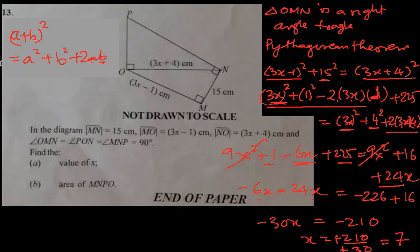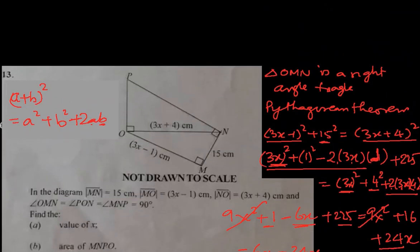So x is 7. That means, let's write the correct length now. This is 3 times 7, 21 minus 1, 20. So this length is 20. 3 times 7, 21 plus 4, 25. This is 25.